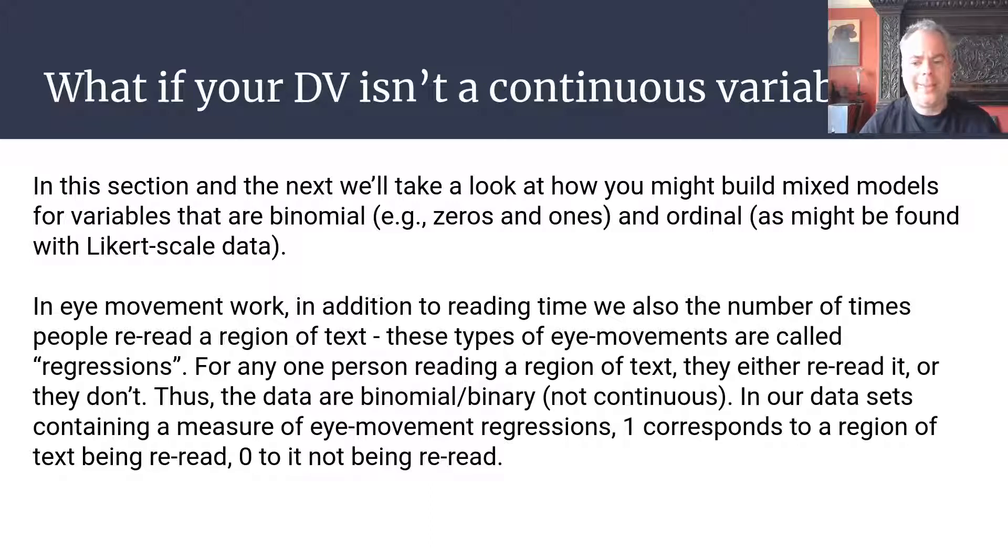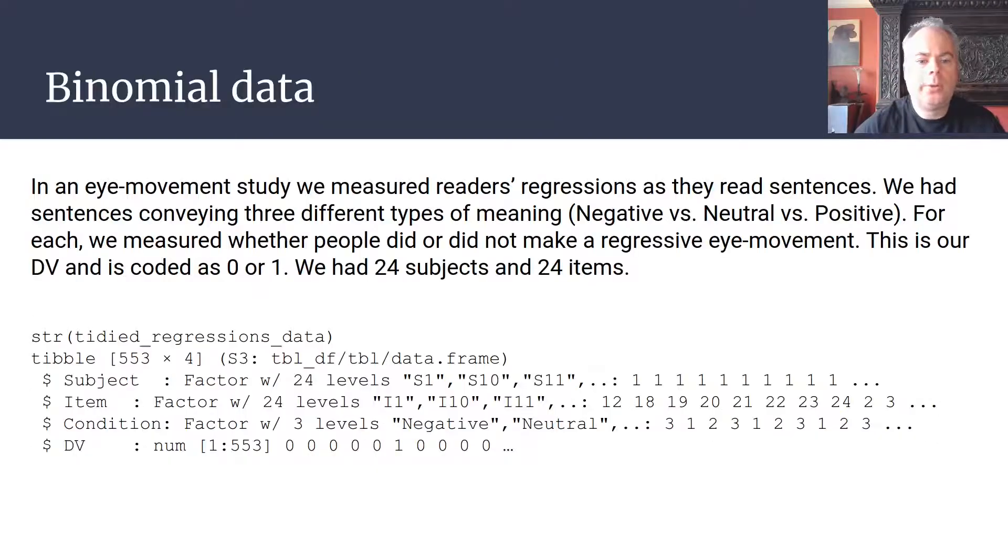If we look at a data set of these eye movement regressions, we'd see that our dependent variable is either a one or a zero. Here's some data from a study I published a few years ago, where we have people's eye movement regressions during reading. They had to read sentences that conveyed three different types of meaning: negative meaning, neutral meaning, or positive meaning. For each sentence, we measured whether people did or did not make a regressive eye movement to reread something that they had read previously.